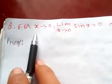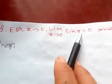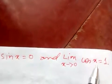Hello friends, today I'm going to prove for x tends to 0, limit x tends to 0, sine of x is 0, and limit x tends to 0, cosine of x is 1.